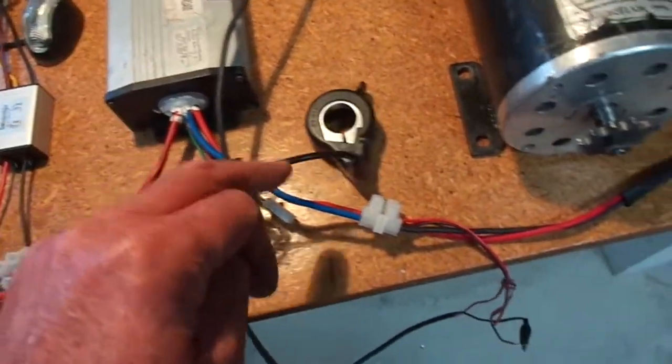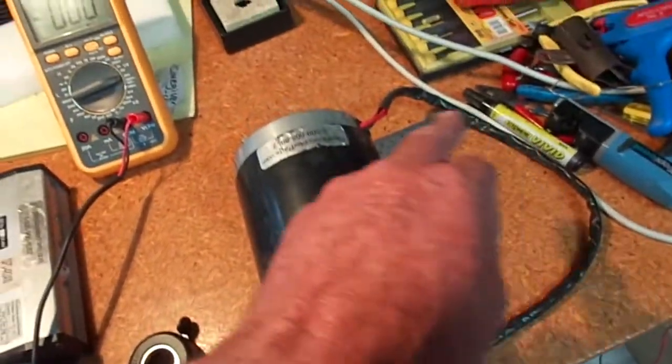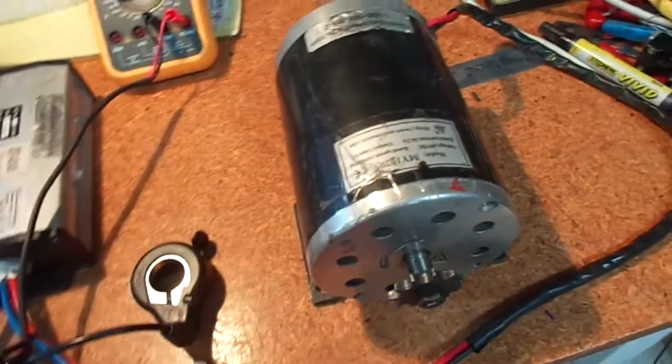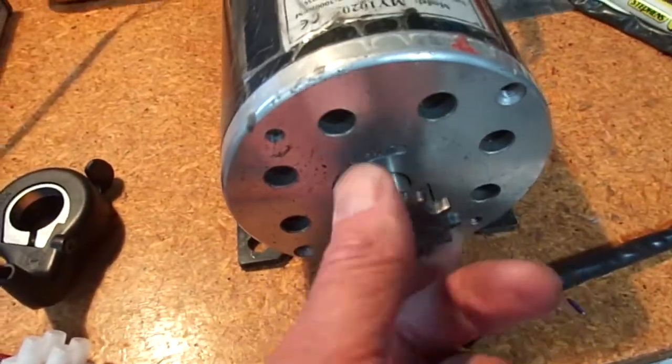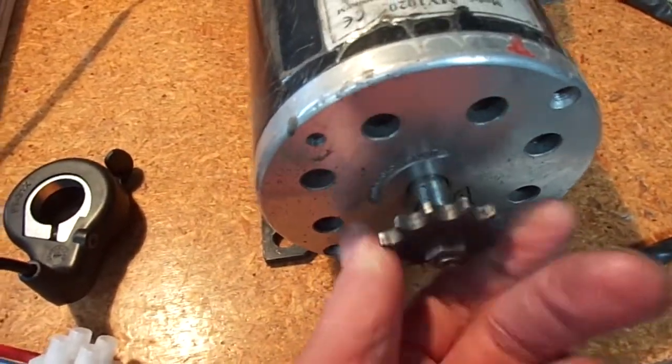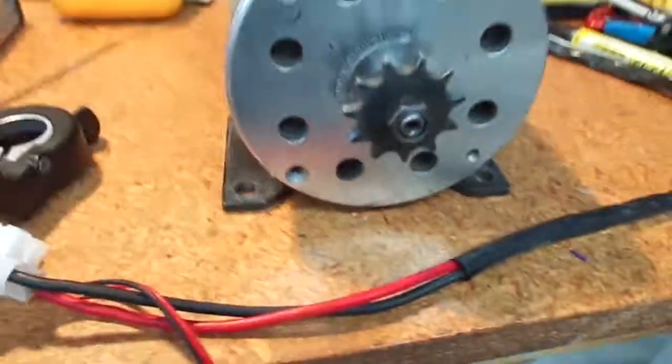And then the power out of there goes via a wire to this 1000 watt motor, and then we have the gear which is going to be connected up to the back axle of the go-kart.